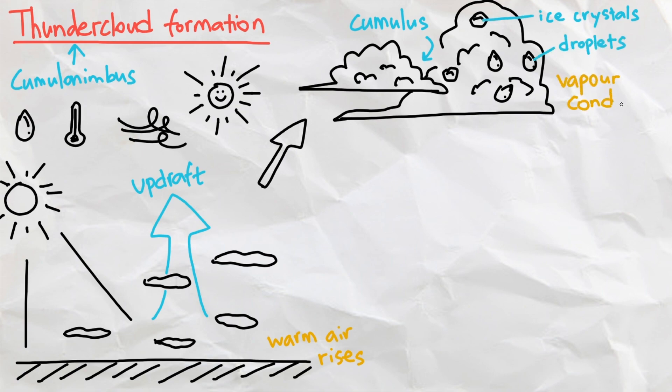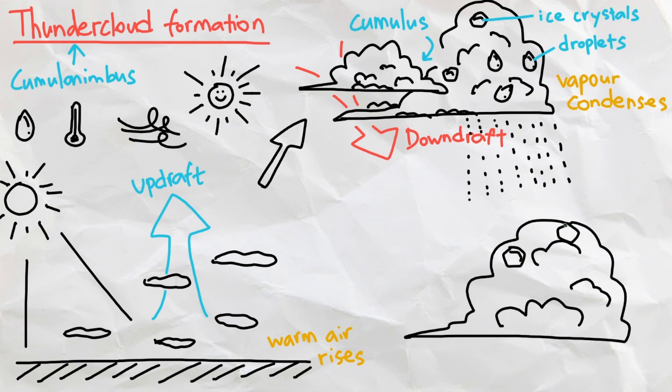And in contrast to an updraft, since colder air sinks, a strong downdraft is generated which drags the water droplets down to start raining. This combination of air, water vapor, water droplets, and ice crystals creates clouds.